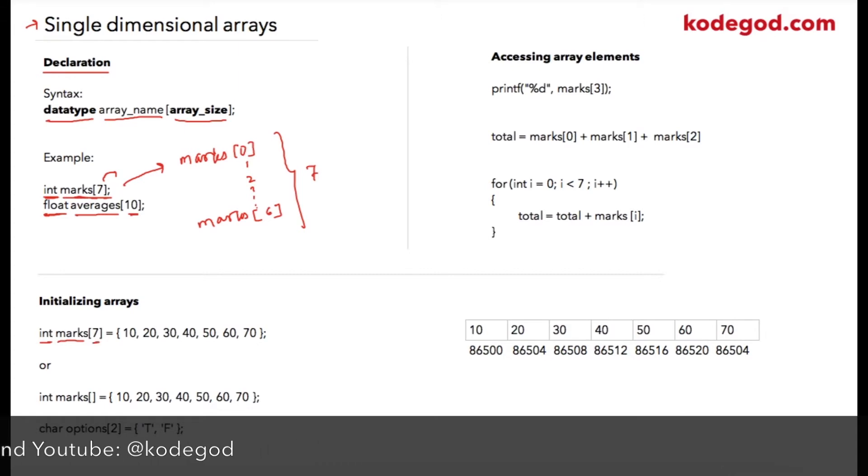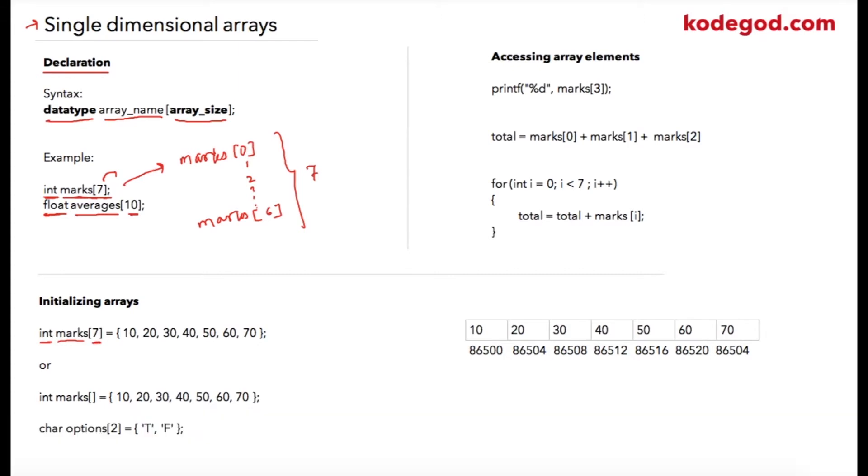So for an integer array of 7, I have specified 7 integer values. Alternatively, if you are going to specify explicit 7 values, then you can skip specifying array data size. The compiler will automatically initialize array marks with the data size of 7.